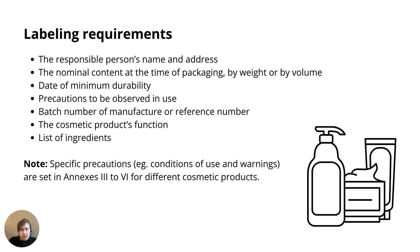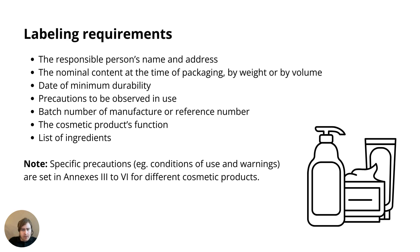Looking at the labeling requirements — packaging labeling specifically — you will need to include information about a responsible person, content information, weight, volume, durability, and precautions to be observed in use. These precautions are connected to what you find in Annex 3 and 6, the substance restriction annexes. You also need to include a batch number, cosmetic product function, and a list of ingredients.